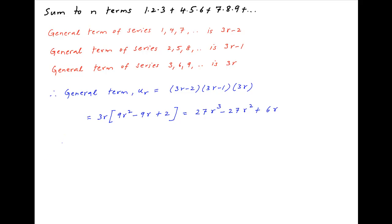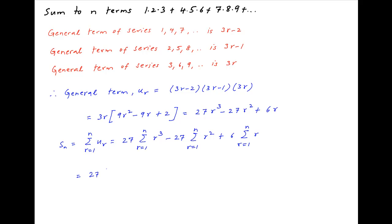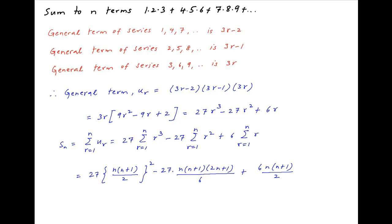With all summations going from 1 to n, the sum to n terms of the given series — which is summation of ur, r going from 1 to n — is equal to the sum of 27r cubed minus 27r squared plus 6r. This equals 27 times [n(n+1)/2]² minus 27 times [n(n+1)(2n+1)/6] plus 6 times [n(n+1)/2].